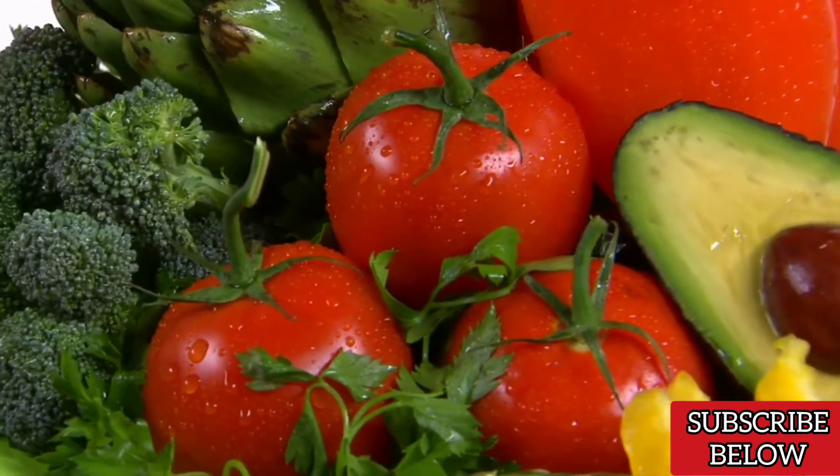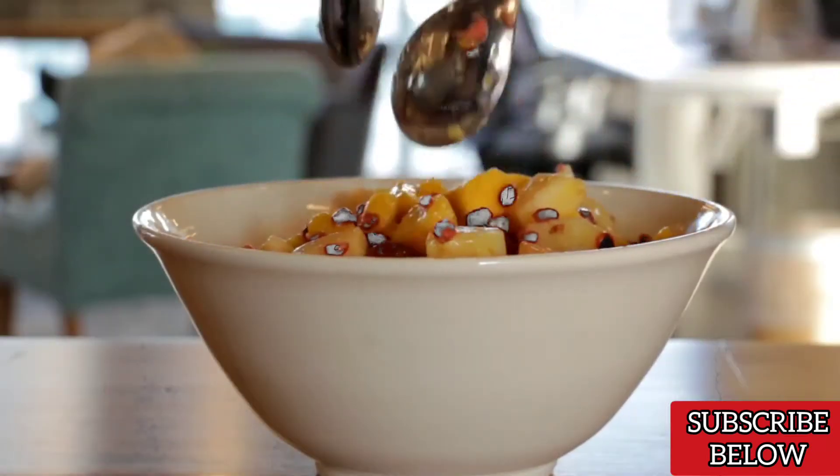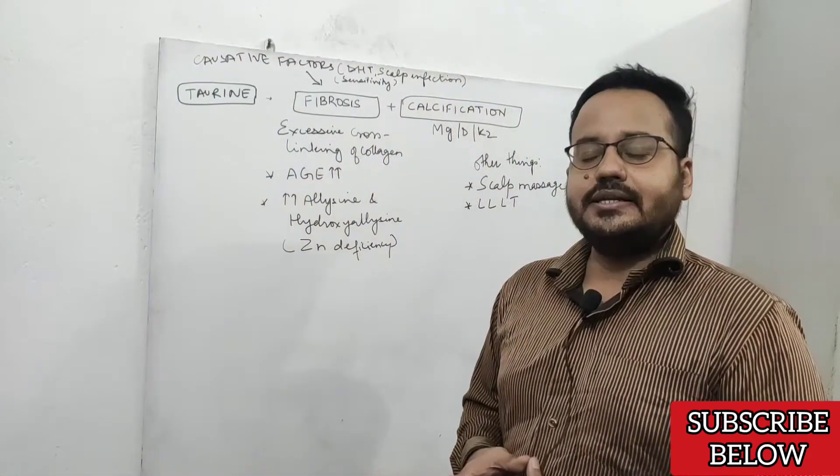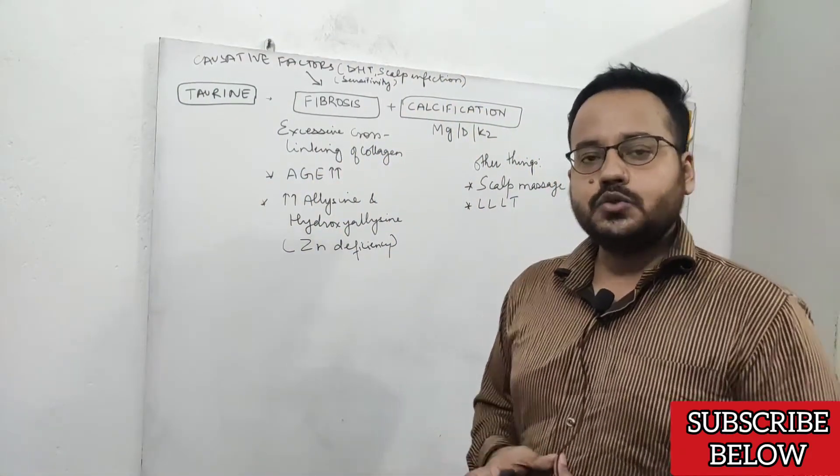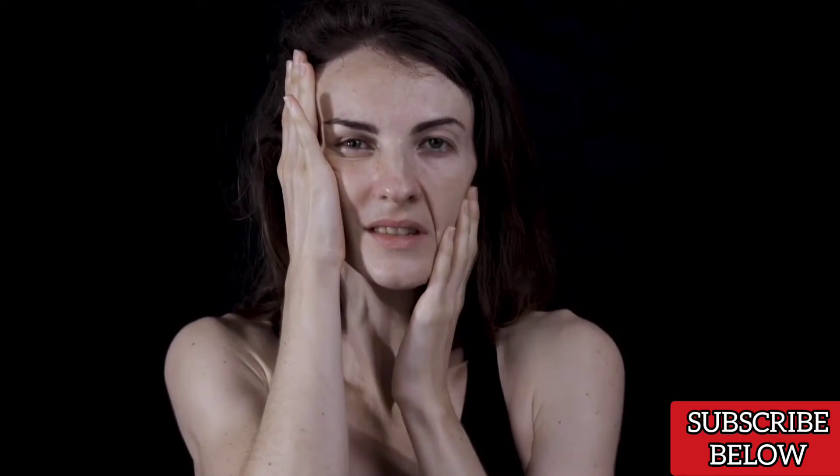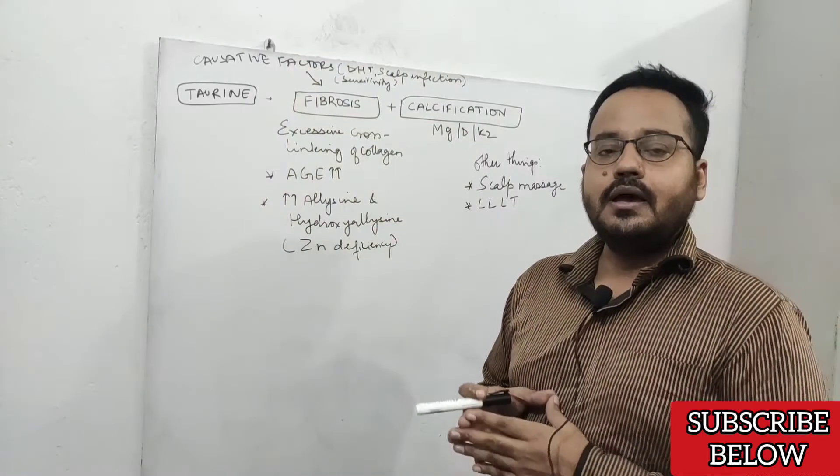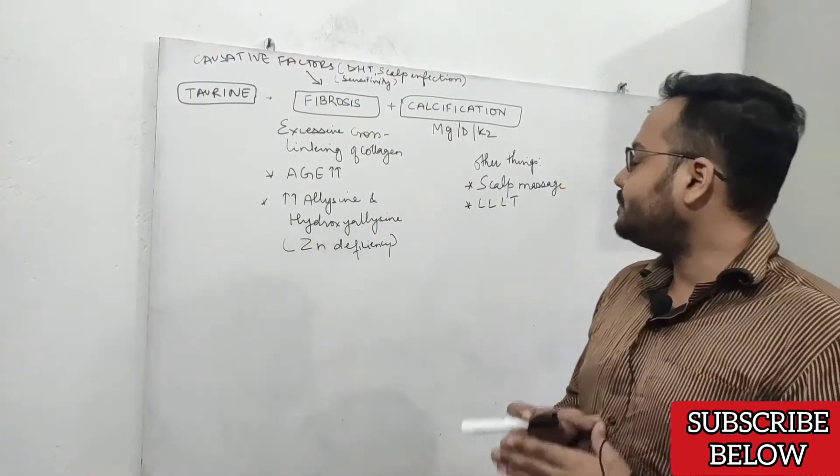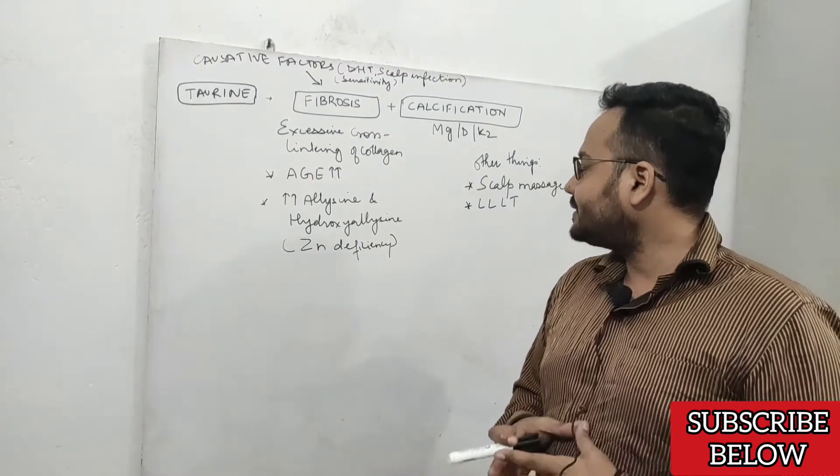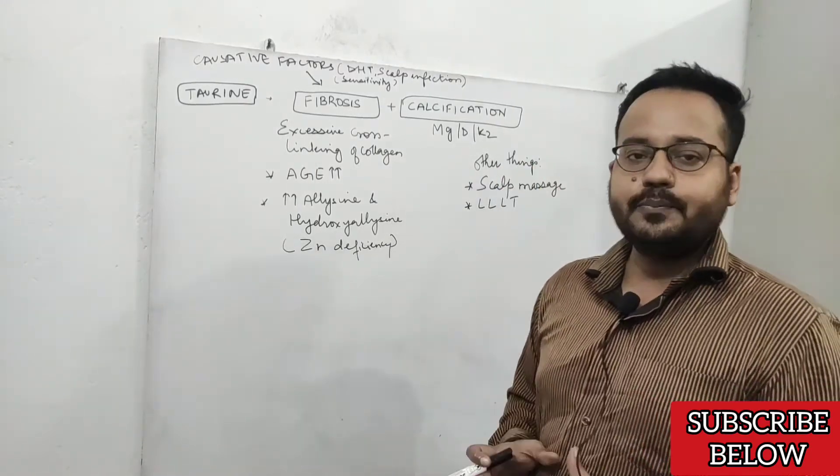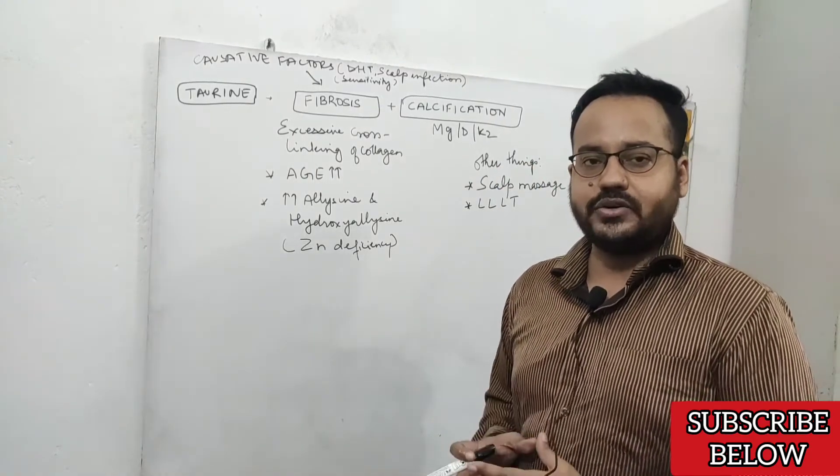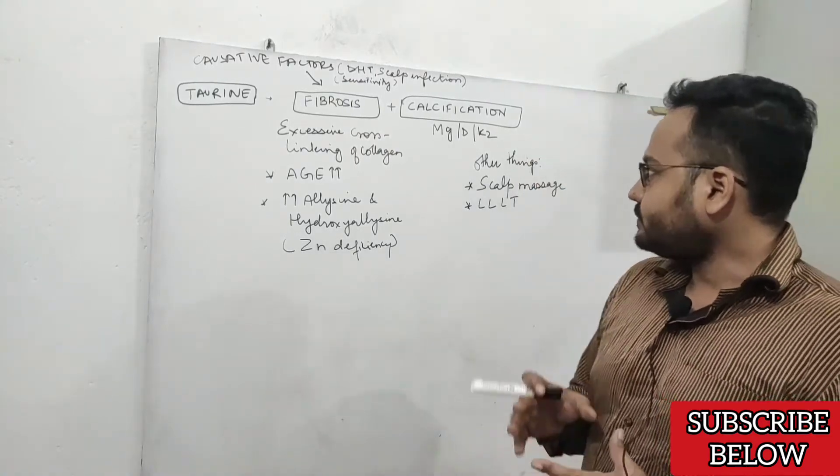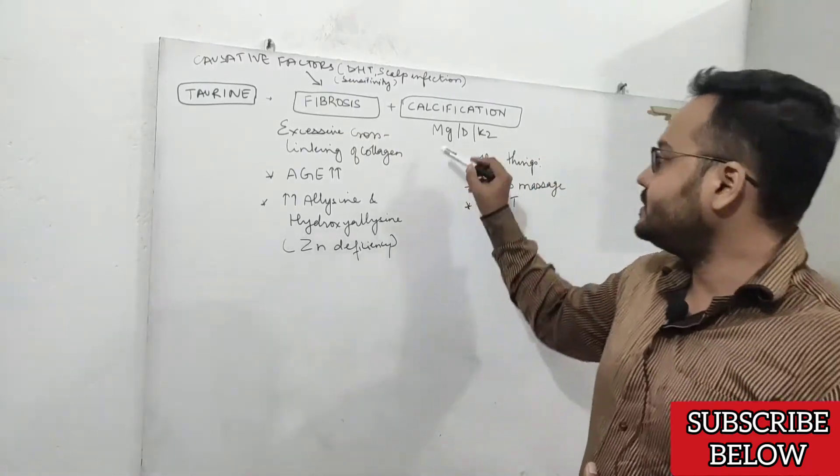If you do not eat vegetables, fruits, nuts, and seeds, the chances of magnesium deficiency are very high. If you have chronic stress or take too much alcohol or caffeine, all those things can deplete magnesium. Vitamin D and K2 are also very important to prevent calcification of your arteries, so it's important to get all these nutrients.